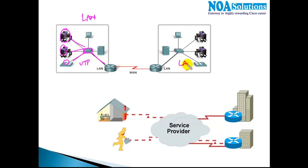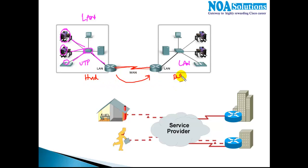Now the question is: for a WAN connection, how does connectivity work from my Hyderabad branch office to a Dubai branch office at different locations? How are these two branch offices going to connect? What are the different kinds of WAN connections we need to use to allow my branches to communicate?